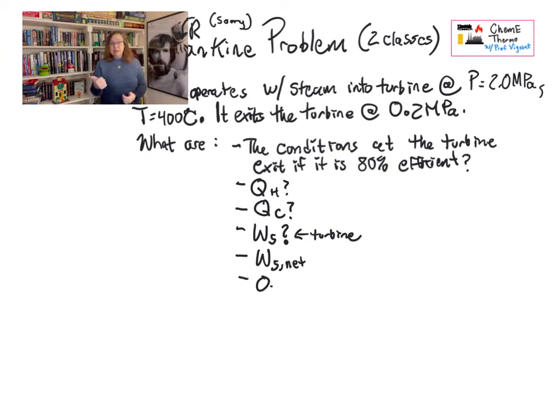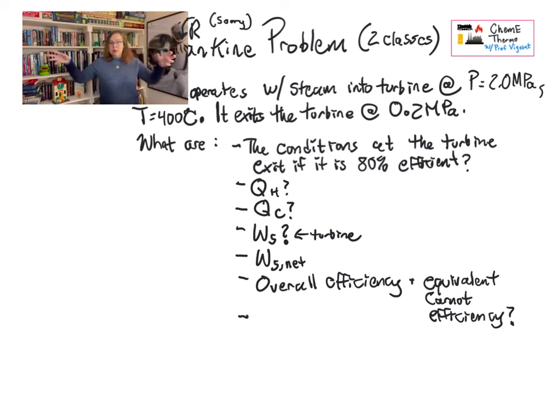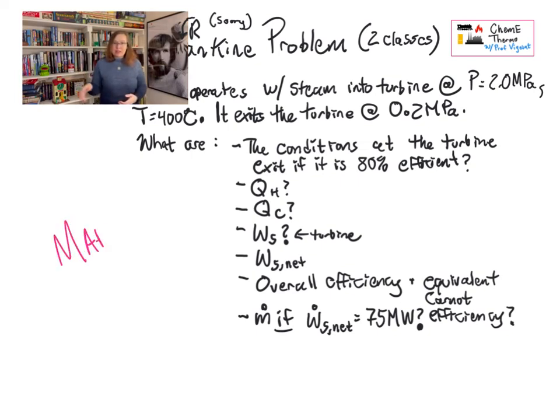What else do we want to know? We want to know QH, that's the heat coming in. QC, the heat that leaves. WS from the turbine. WS net, so that's the turbine and then subtracting off the pump. Because part of the work the turbine is doing is actually powering the pump that keeps the system going. And then what is the overall efficiency of this at turning QH into WS net? And what would be the efficiency of an equivalent Carnot cycle? Remember, you don't have to work everything out about the Carnot cycle. You can use the temperatures to figure out what the efficiency of an equivalent Carnot cycle would be. So you can work that out in one equation at the end. And then finally, what is MDOT? What is our necessary steam flow rate if we want to generate 75 megawatts from this power plant?